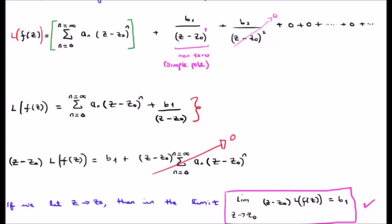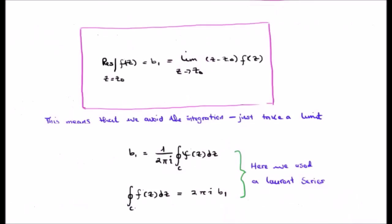Now, the power and utility of this might not be immediately obvious, but I'm going to demonstrate very shortly how powerful and useful it is. We can rewrite this using our previous nomenclature in the following way, such that we have the residue is equal to b sub one is equal to the limit of our function as z approaches z zero of z minus z zero multiplied by our function. The trick here is that we get to avoid doing the integration by simply taking a limit.